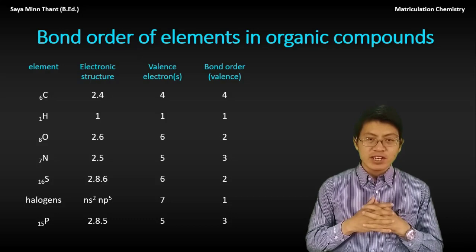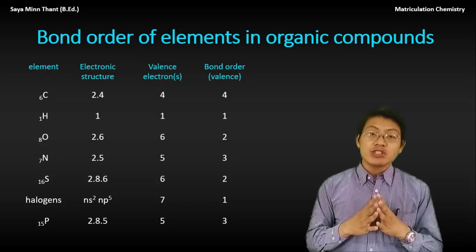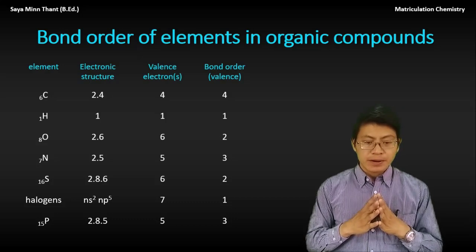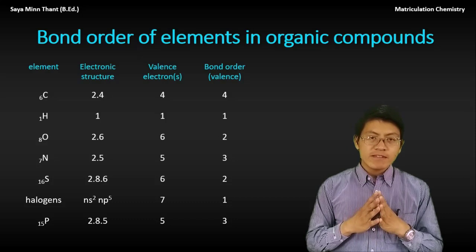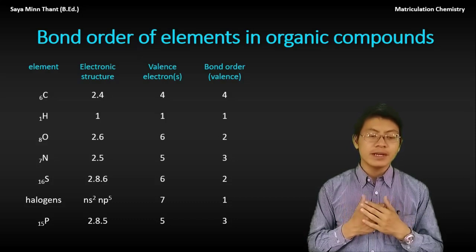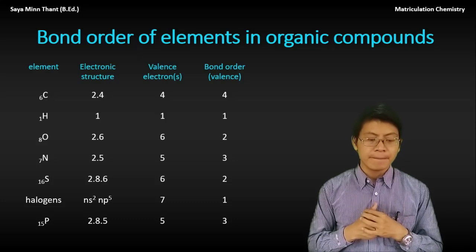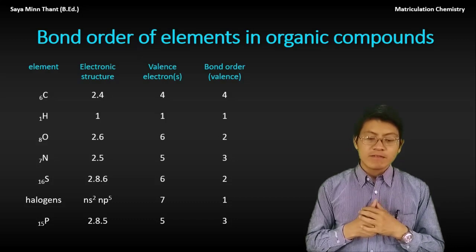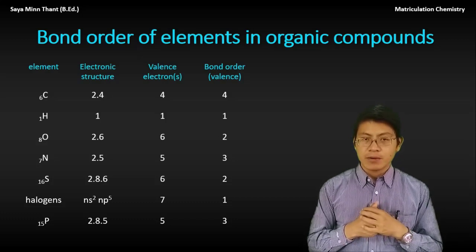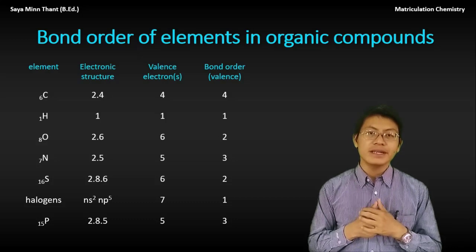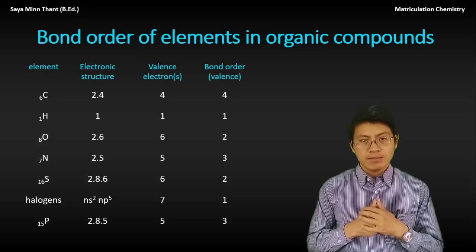The carbon valence is 4. The hydrogen valence is 1. The oxygen valence is 2. The nitrogen valence is 3. So the valences for oxygen, nitrogen, sulfur, and halogen, also including phosphates, follow from their group positions.